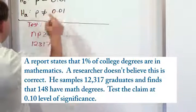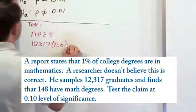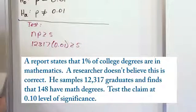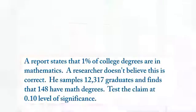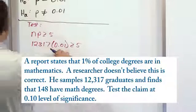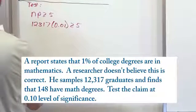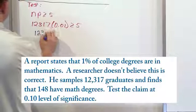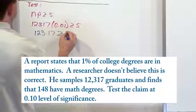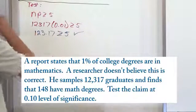Times p, which comes from the null hypothesis, 0.01. We're testing to see if it's greater than or equal to 5. When we multiply 12,317 times 0.01, we get 123.17, and that's clearly greater than or equal to 5. So that passes the check.